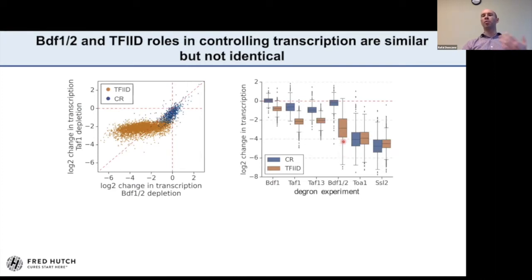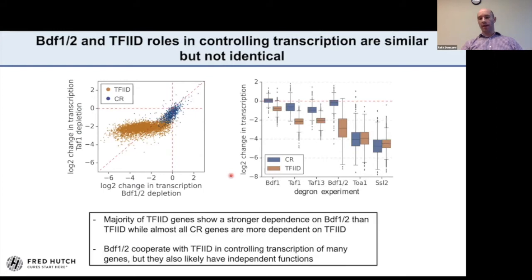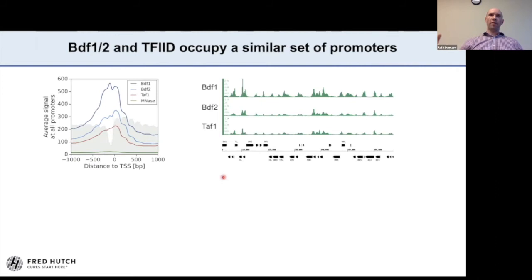To establish a baseline for maximum loss of transcription trackable with this system, I also degraded subunits of two basal factors, TF2A and TF2H, and found we can reproducibly observe 16-fold and higher changes. In case of basal factors, both gene classes are equally affected, which makes sense. There are two main conclusions: majority of TF2D genes show stronger dependence on BDF1 and BDF2 than TF2D, while almost all coactivator redundant genes are more dependent on TF2D. BDF1 and BDF2 clearly cooperate with TF2D in controlling transcription of many genes, but they also likely have independent functions.